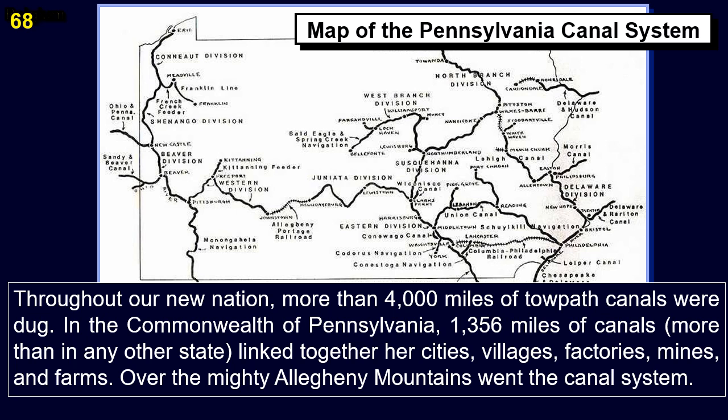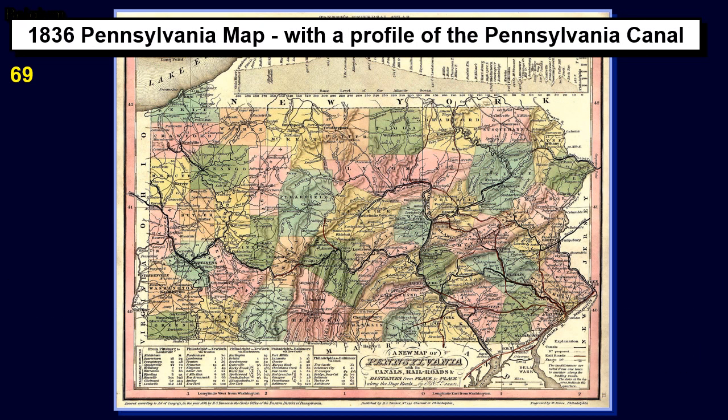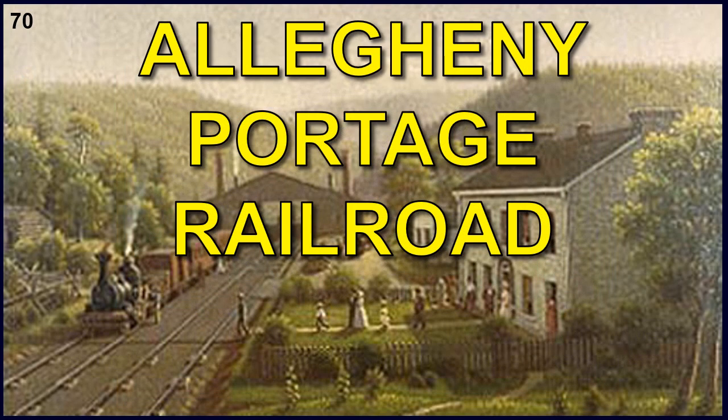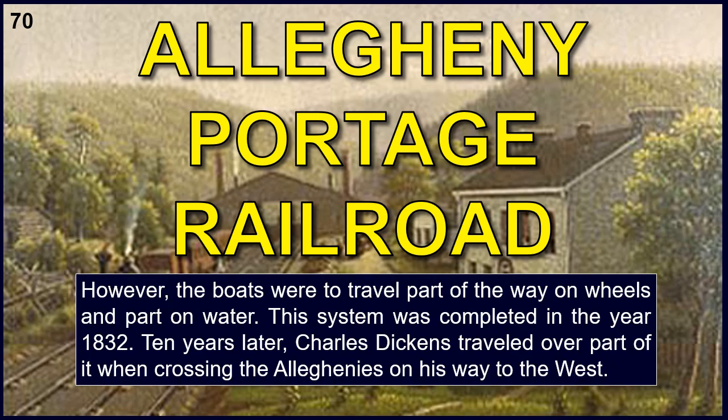Over the mighty Allegheny Mountains went the canal system. The whole journey from Philadelphia to Pittsburgh involved crossing the Allegheny Mountains and was to be made in canal boats — though the boats would travel part of the way on wheels and part on water. This system was completed in 1832. Ten years later, Charles Dickens traveled over part of it when crossing the Alleghenies on his way to the west.